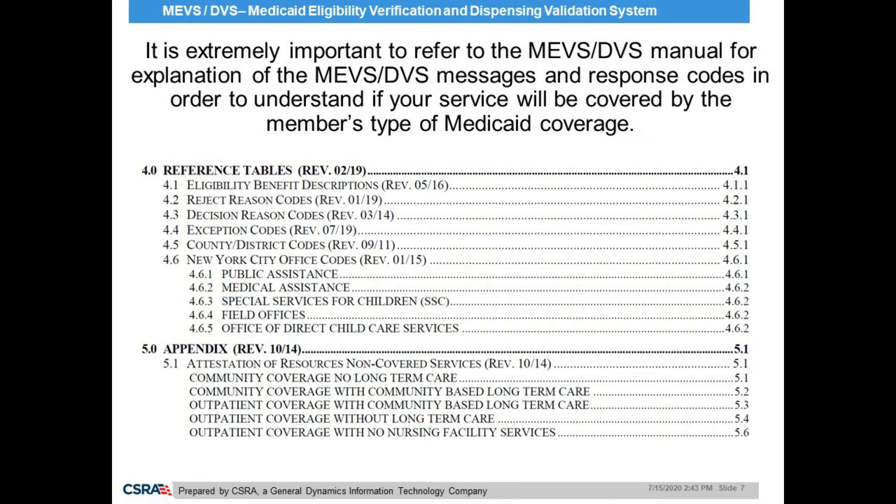We will now look at some of these sections including 4.1 Eligibility Benefit Descriptions, 4.4 Exception Codes, 4.6 New York City Office Codes, and Section 5 Appendix as examples of helpful sections to providers when interpreting eligibility responses.